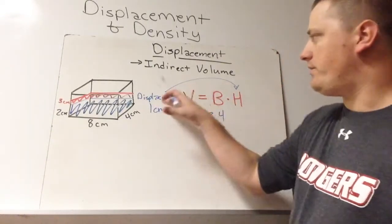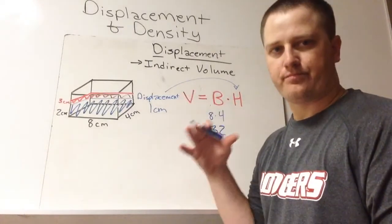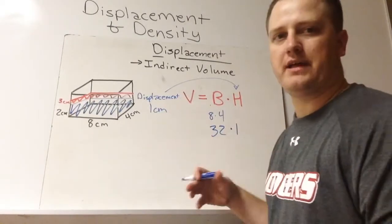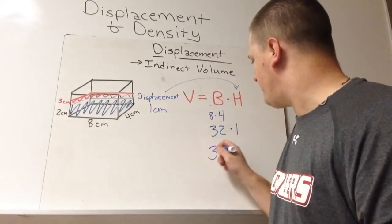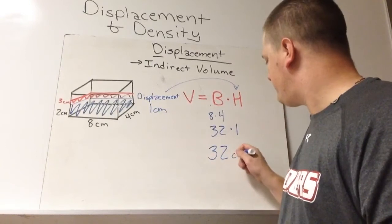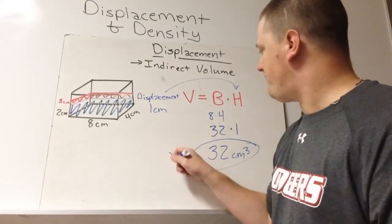We have a height, which is our displacement of 1, so we're going to multiply by 1. So that's going to give us a volume of 32 cubic centimeters.